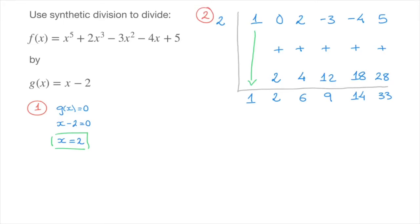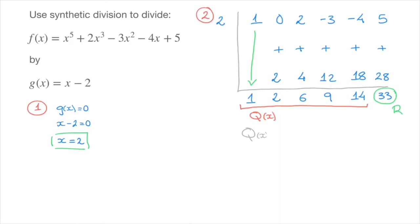The bulk of the work is done. Everything we need is at the bottom row of this table. The 33 at the end is the remainder we obtain when dividing f of x by g of x. The numbers 1, 2, 6, 9, and 14 are the coefficients of the quotient polynomial. So the quotient polynomial q of x equals x to the power of 4 plus 2x cubed plus 6x squared plus 9x plus 14.